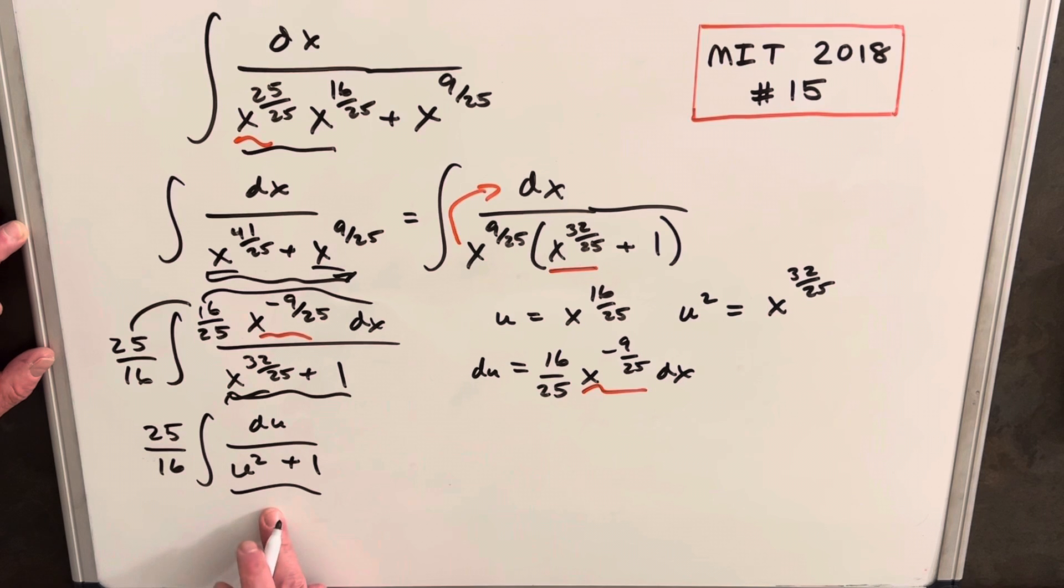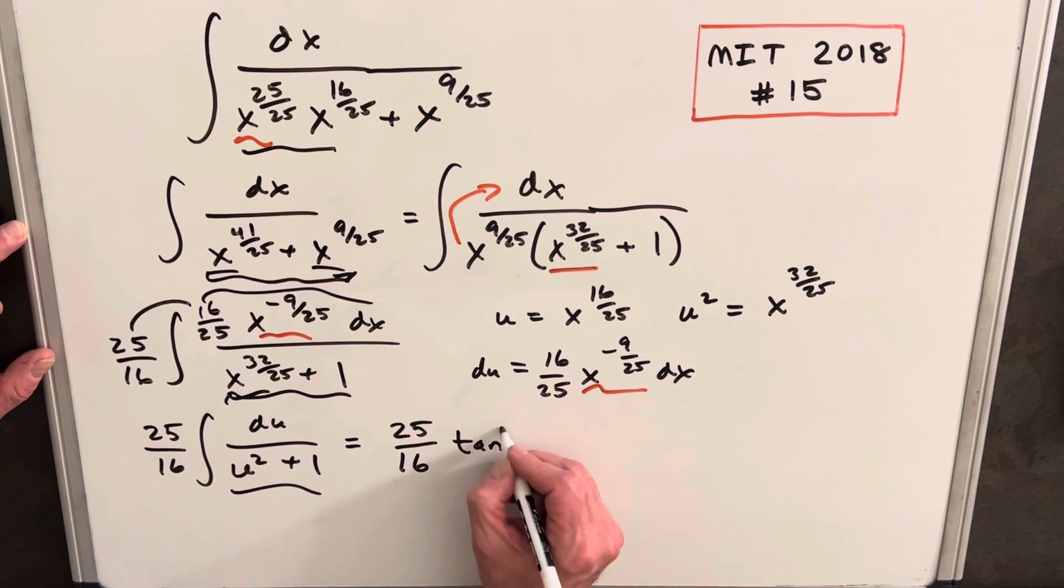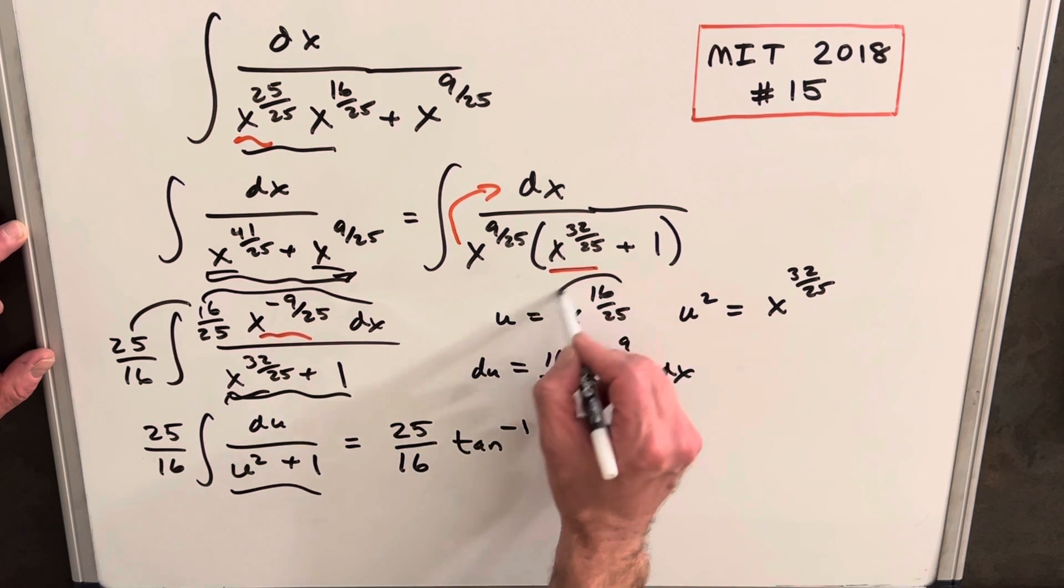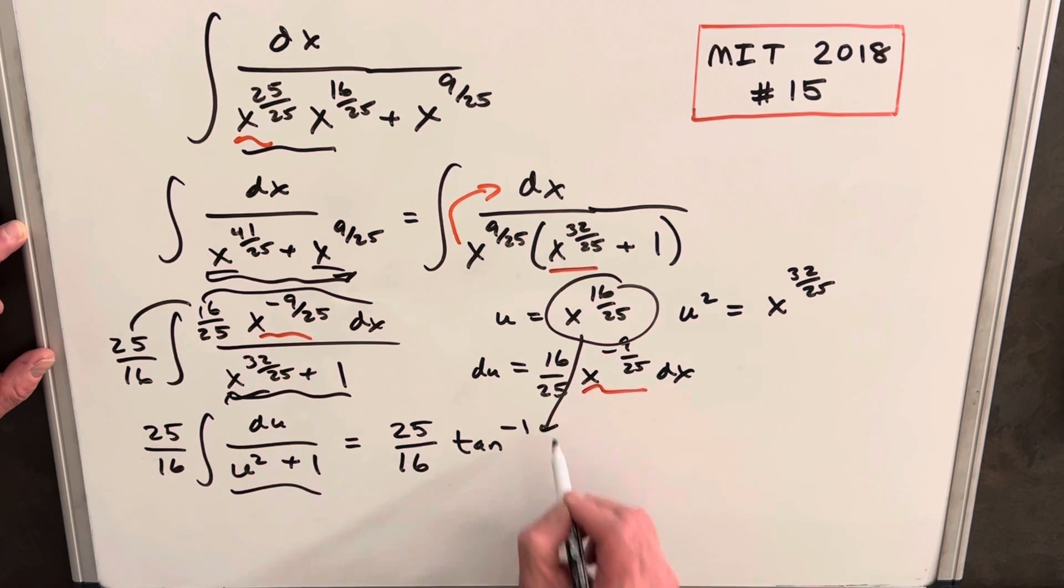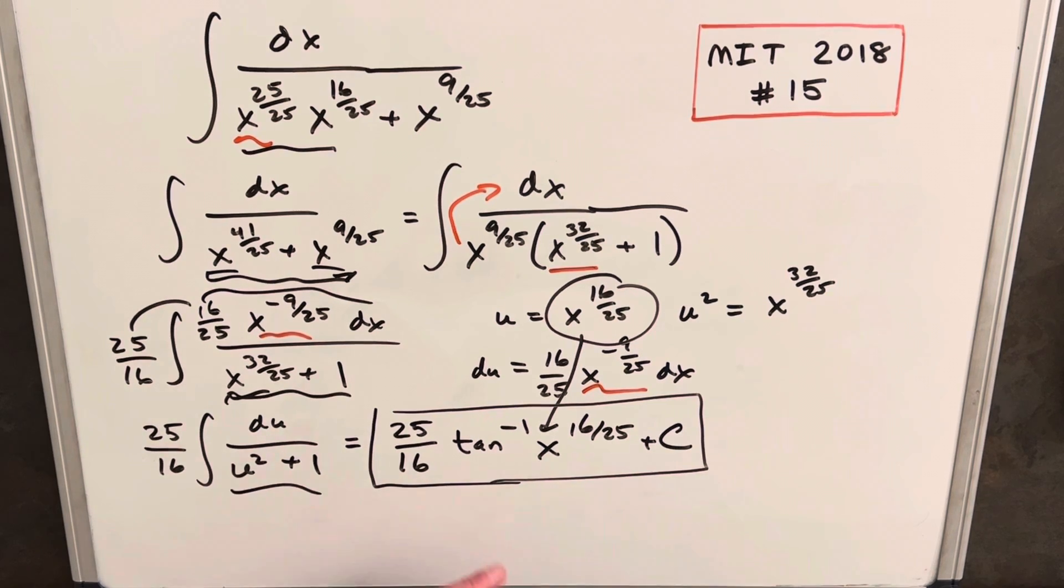We know this integral, this is going to be arctangent, so we end up with 25 over 16 inverse tan of u. But let's just do it one step: we'll substitute this back in for our u here and we're going to have x to the 16 over 25 plus c. That's it.